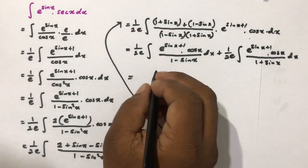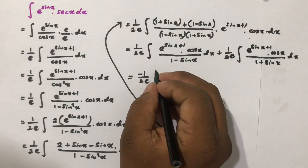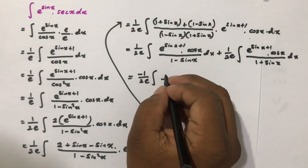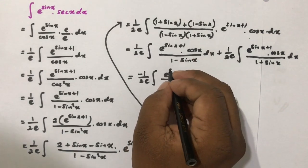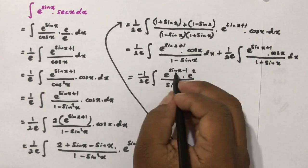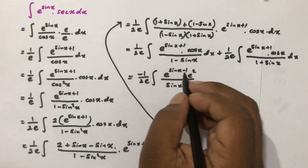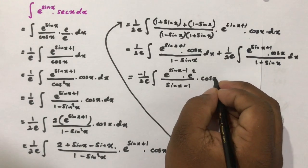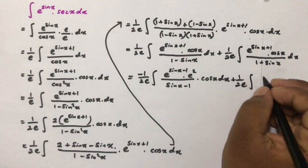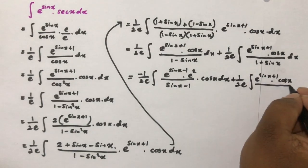Taking 1 over 2 times e: in the first integral we have sine of x minus 1 in the denominator. To get sine of x plus 1 into that form, I multiply by e squared so that in the numerator we have sine of x minus 1 plus 2, giving e to the sine of x minus 1 plus 2 times e to the sine of x plus 1, with cosine of x dx.